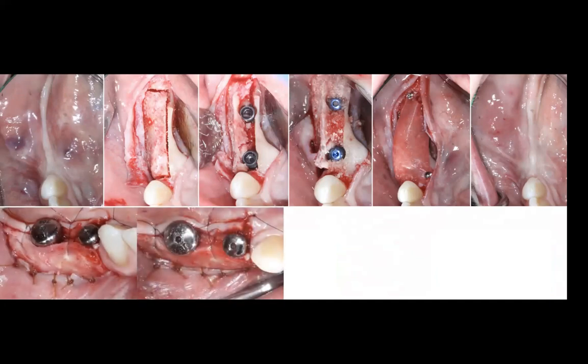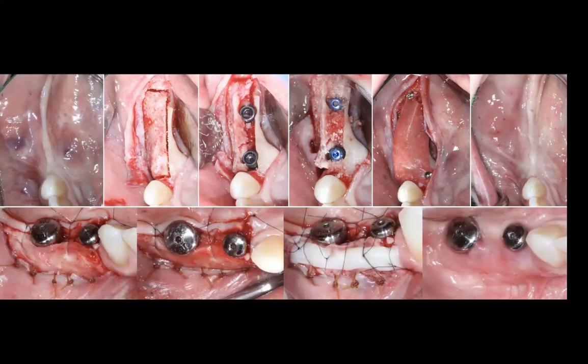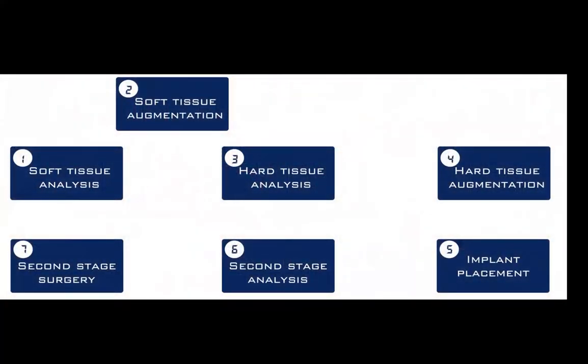Usually, the way we manage hard and soft tissue grafting cases is: bone graft first, then implant placement, then second-stage surgery. But here on screen, you see how much surgery it takes to regenerate a horizontal defect where we actually placed the implant at the same time as the bone graft — a ridge split, which is a form of horizontal bone augmentation allowing simultaneous implant placement — followed by soft tissue grafting at a later stage.